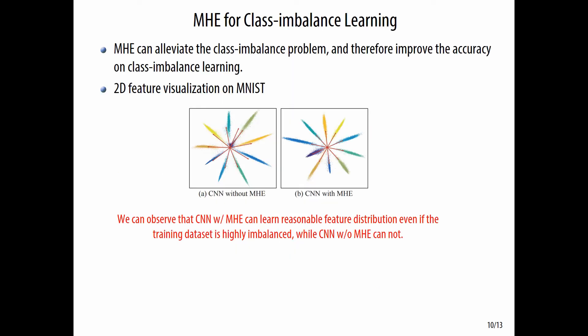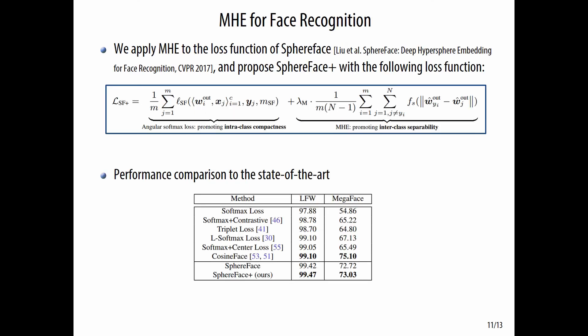CNN with MHE can learn a reasonable feature distribution even if the training dataset is highly imbalanced, while CNN without MHE cannot. We also apply MHE to face recognition. Specifically, we combine MHE with a state-of-the-art algorithm, SphereFace.